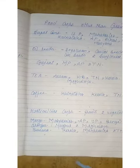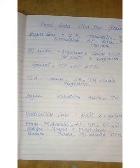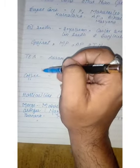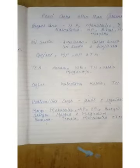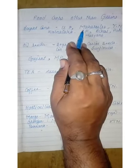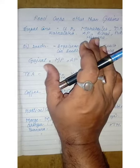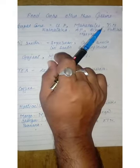Myself Ashish Jain once again in Agriculture Class 10th. Today we will study food crops other than the grains, also mentioned in your NCERT book on page numbers 40 and 41. The main points are sugarcane, oilseed, tea, coffee, and horticulture crops. Sugarcane is one of the tropical as well as subtropical crops grown in hot and humid temperature of 21 to 27 degrees Celsius with annual rainfall of 75 to 100 cm per year.